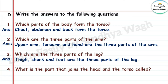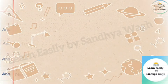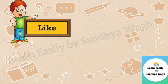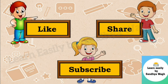Question 4: What is the part that joins the head and the torso called? Answer: The neck is the part that joins the head and the torso. That's all for today; we will meet again in our next video. Till then, keep learning, keep enjoying — bye bye!